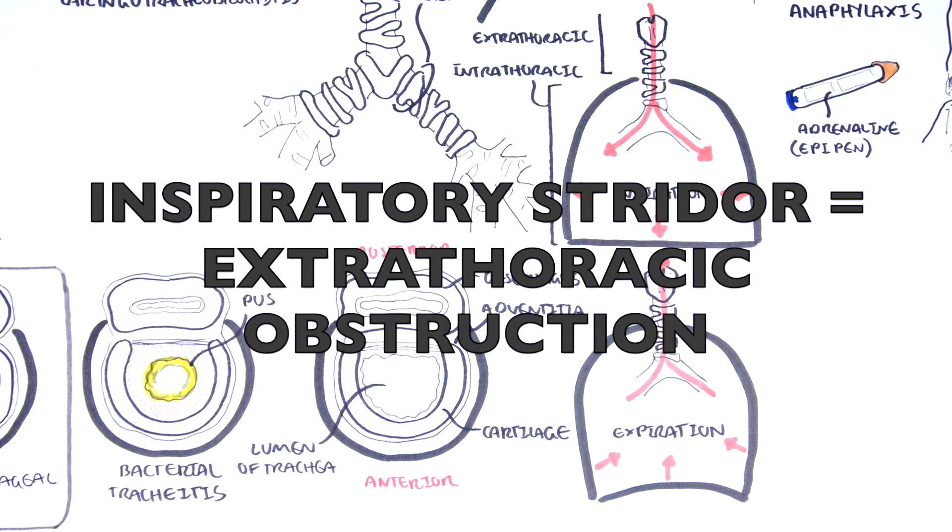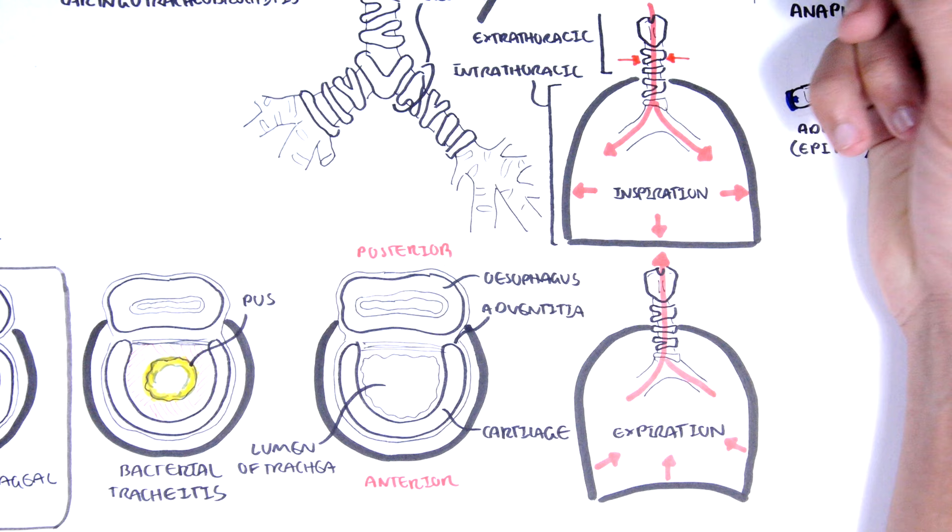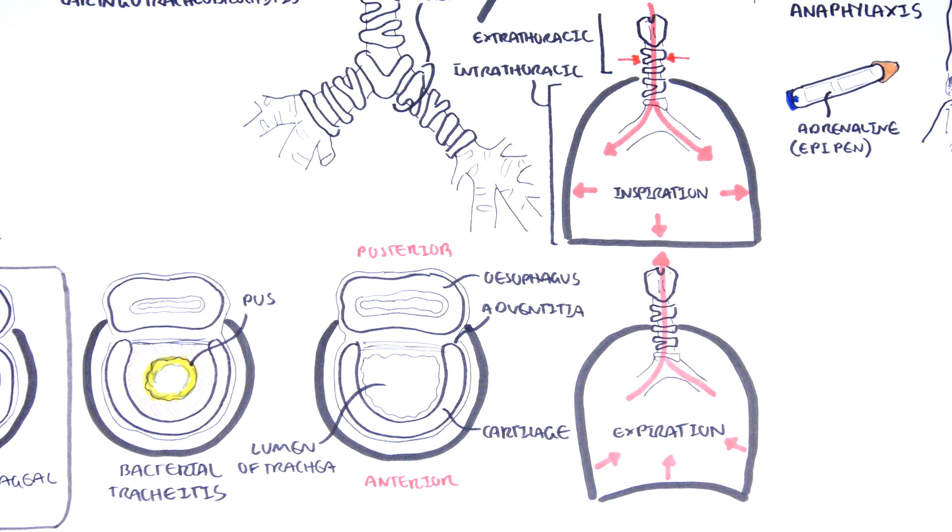In summary, inspiratory stridor is caused by extrathoracic obstruction. Because during inspiration, the pressure drops and causes collapse. So if you think about it, if you have obstruction anywhere in the extrathoracic region, it will further amplify the obstruction and thus you get inspiratory stridor.